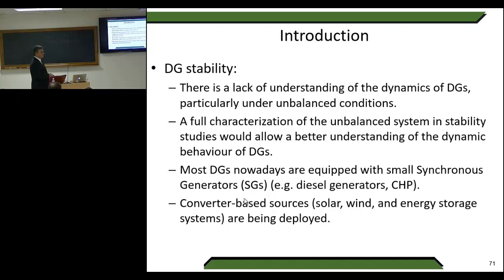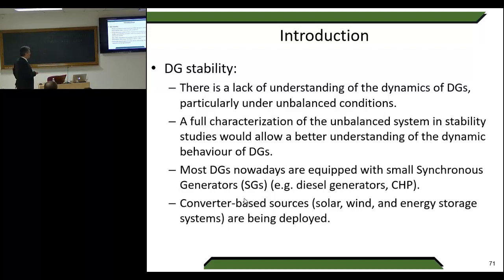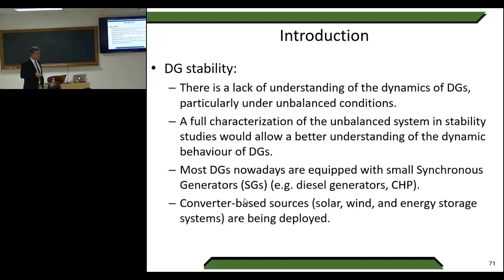There is a lack of understanding of the dynamics of distributed generators, particularly under unbalanced conditions. One distinctive topic in microgrids compared with transmission systems is that we normally face unbalanced systems — this is not the case at transmission level. A full characterization of the unbalanced system in stability studies would allow a better understanding of DG dynamic behavior. Most DGs are equipped with small synchronous generators, and converter-based sources like solar, wind, and energy storage systems are being deployed.